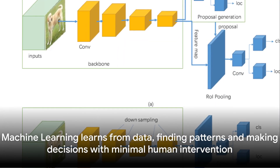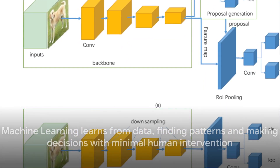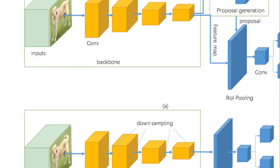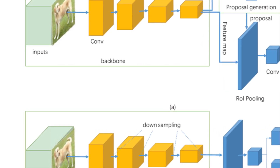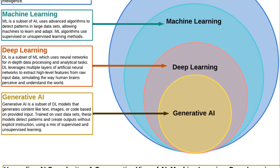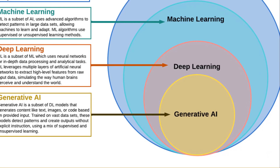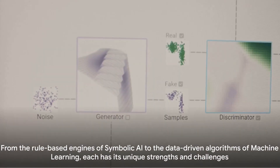Enter machine learning, a paradigm shift in AI. Unlike its predecessor, machine learning doesn't rely on hard-coded rules. Instead, it learns from data, finding patterns, and making decisions with minimal human intervention.